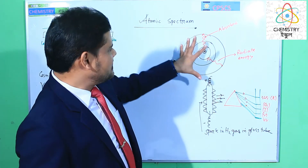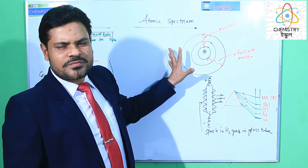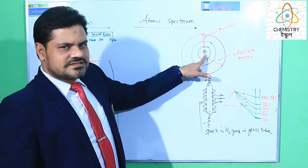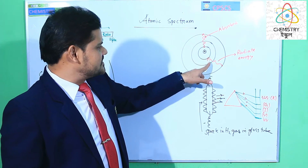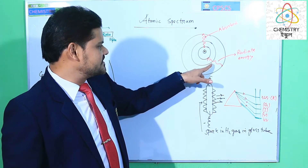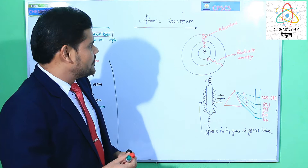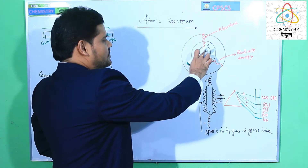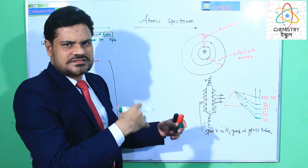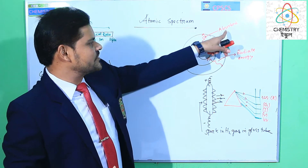Look at the whiteboard here. There is a simple figure of atomic structure. This is the center — the nucleus — and these are the different energy levels: first, second, and third. When the electron of the first energy level jumps to the higher energy level, the third energy level, this electron absorbs energy.